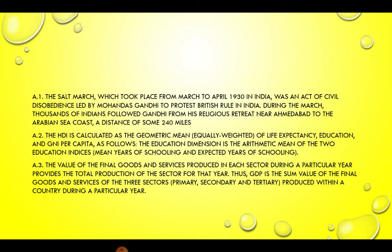Answer 3. The value of the final goods and services produced in each sector during a particular year provides the total production of the sector for that year. Thus, GDP is the sum value of the final goods and services of the three sectors — primary, secondary, as well as tertiary — produced within a country during a particular year.